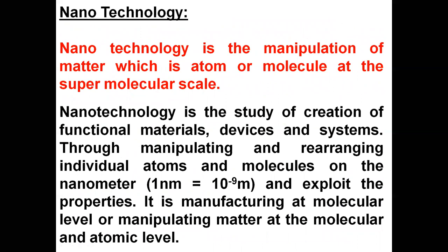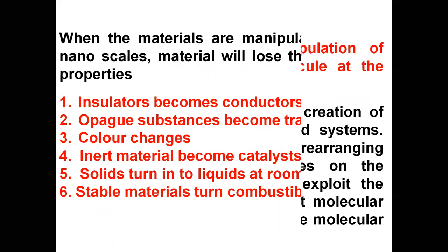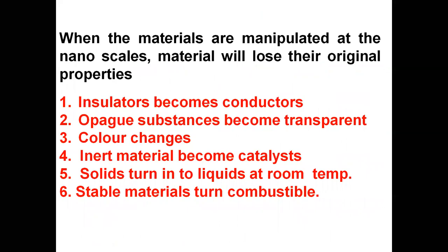Nanotechnology is the manipulation of matter — at the atomic, molecular, or super-molecular level. Nanotechnology is the study of creation of functional materials, devices, and systems through manipulating or rearranging individual atoms so that it will be on the nanometer scale. One nanometer = 10⁻⁹ meters. It is manufacturing at the atomic or molecular level — anything that can be manufactured at the molecular level uses nanotechnology.